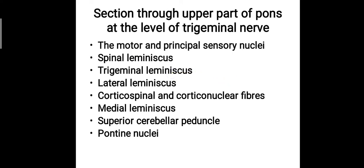If you take a section through the upper part of the pons at the level of the trigeminal nerve nuclei, you will find these features: the motor and principal sensory nuclei of the trigeminal nerve, the spinal lemniscus, trigeminal lemniscus, the lateral lemniscus, the corticospinal and corticonuclear fibers, the medial lemniscus, the superior cerebellar peduncle, and the pontine nuclei.